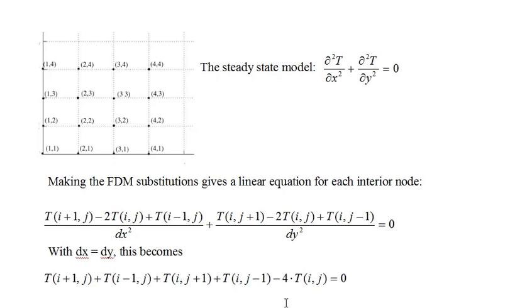Making the finite difference method substitutions in the steady state model gives the equation in the middle of the page. With dx equals dy, this simplifies to: T(i+1, j) + T(i−1, j) + T(i, j+1) + T(i, j−1) − 4·T(i, j) = 0. Note that this derivative substitution only works for interior grid points. For example, if we tried to use it at grid point (1, 1), then T(i−1, j) would be T(0, 1), which doesn't exist. So this equation only applies to interior points.